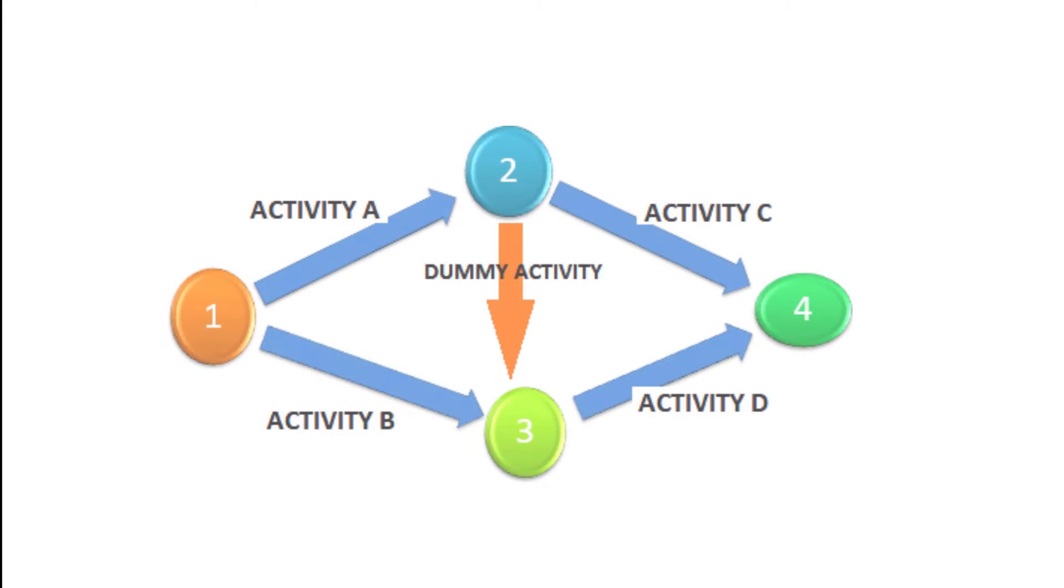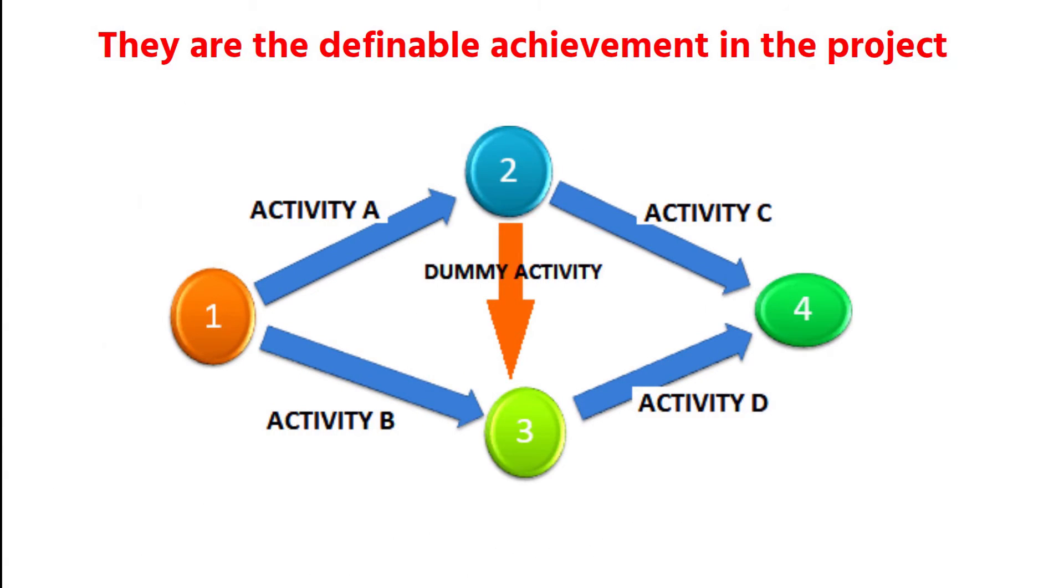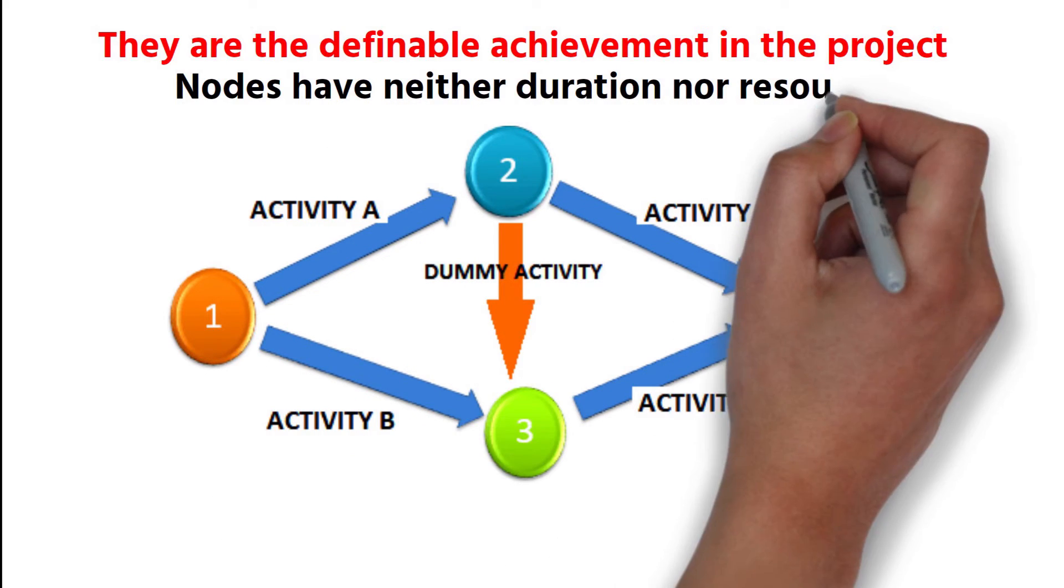The circles numbered 1, 2, 3, and 4 are the nodes of this network system. They are the definable achievement in the project. Nodes have neither duration nor resource.